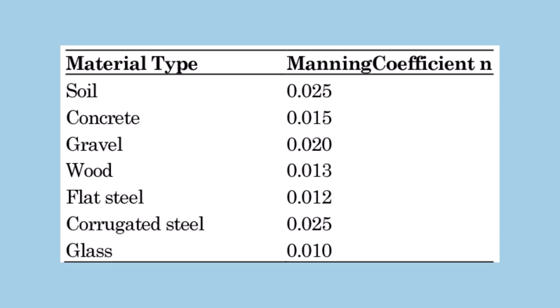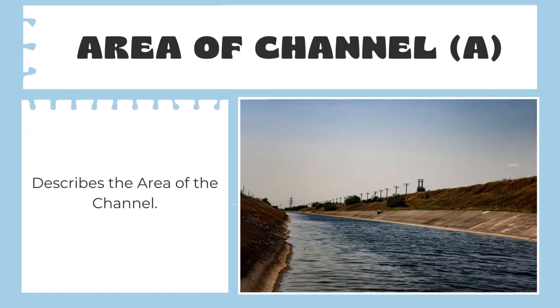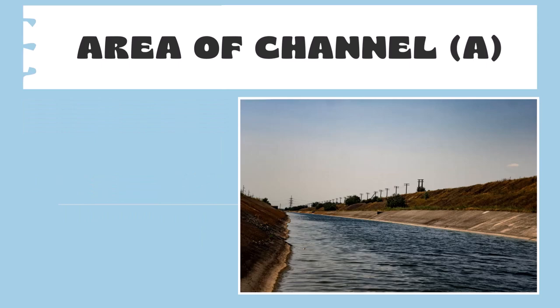Next is the area of the channel, which describes the measured area of the channel in which the water is flowing. Pretty straightforward there.